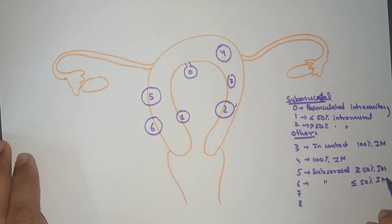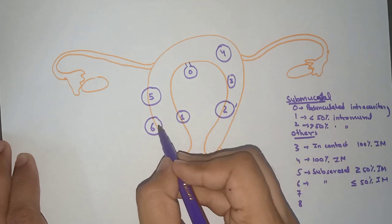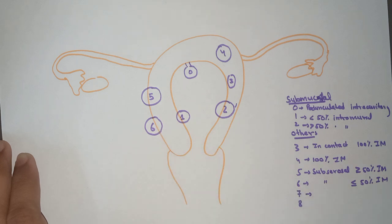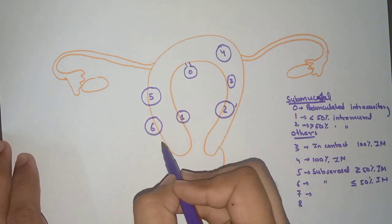Now coming to Type 7. Type 7 is pedunculated subserosal.